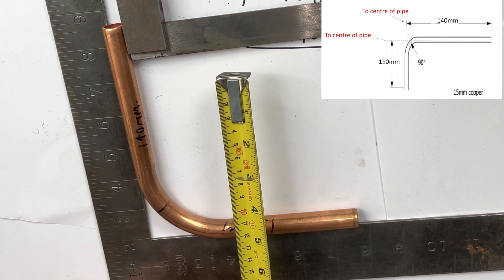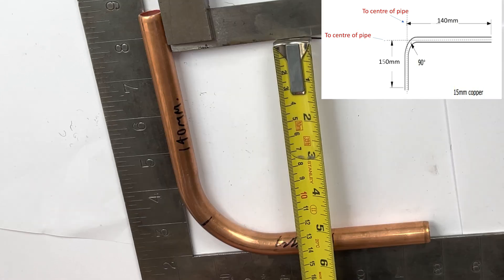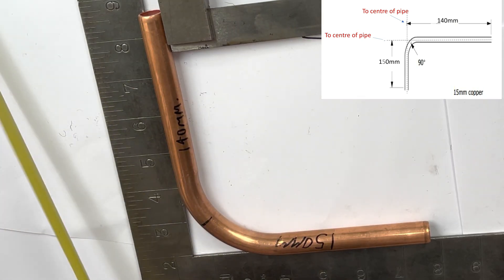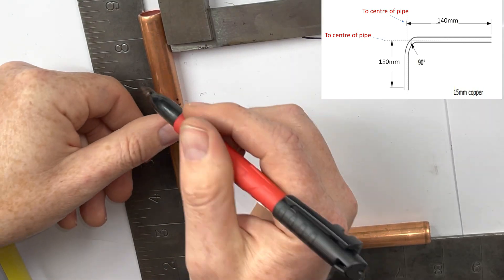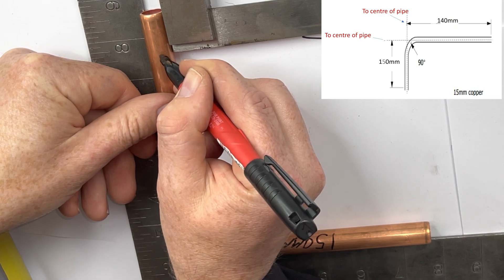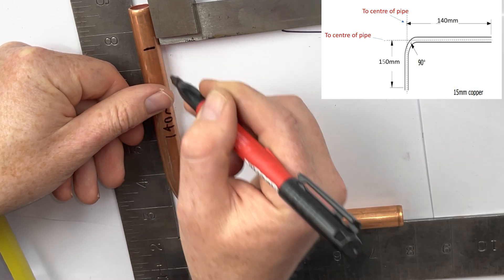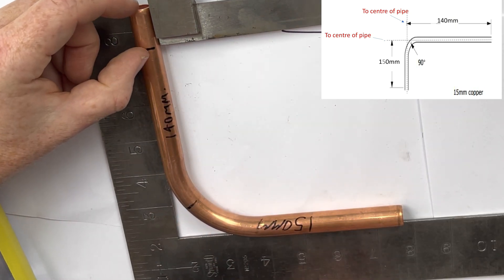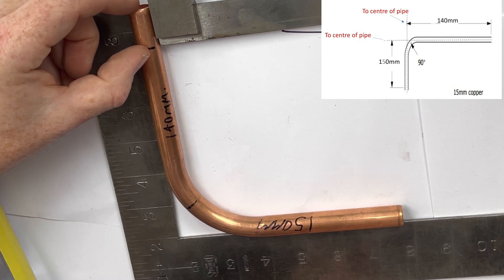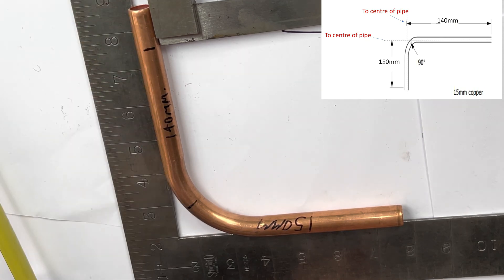Let's check the measurements. We need it to be 140 mm which is here. So we mark the pipe here and that is how much the pipe has grown or gained in length. We need to trim this side off.